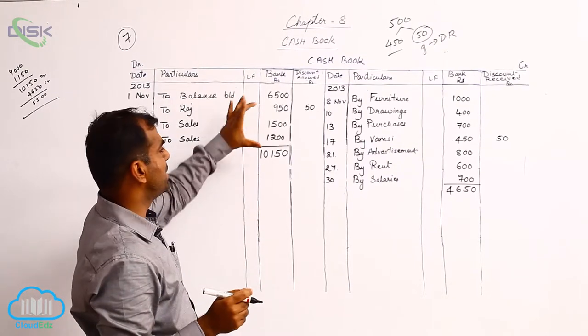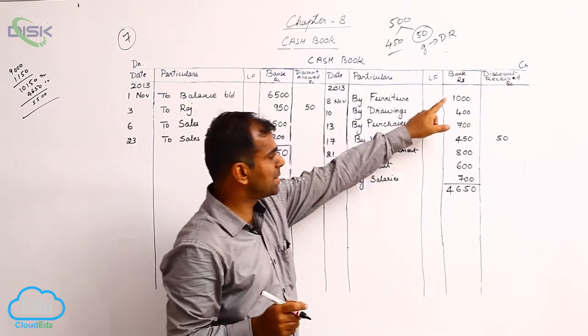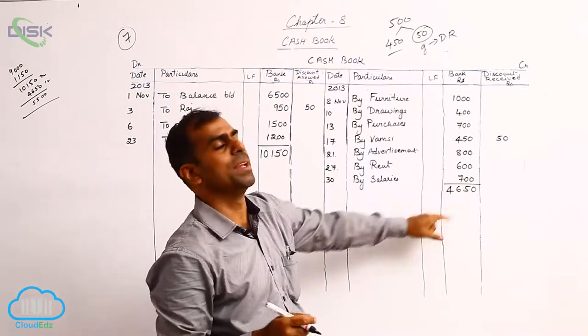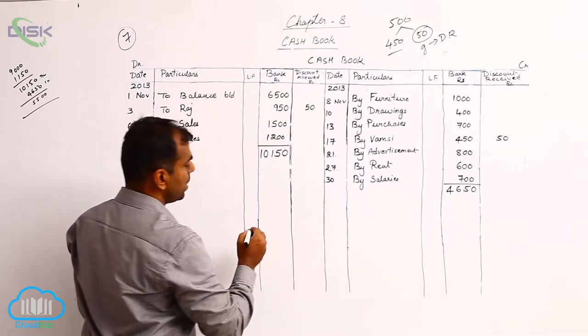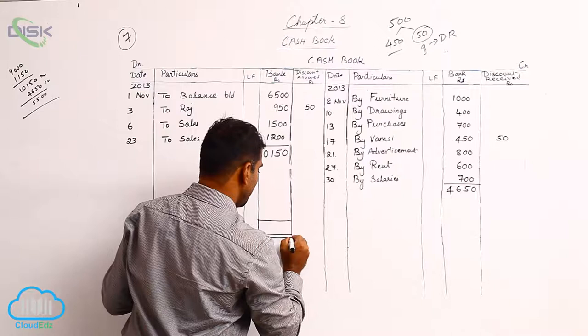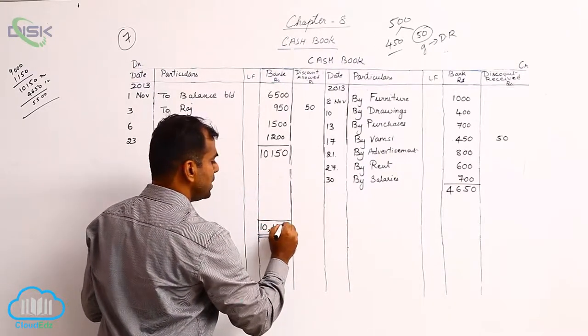When we total, our debit side total comes to 10,150 and the credit side total of the bank column comes to 4,650. So let us balance the bank column. Since the debit total is more, we write 10,150 on both the sides.